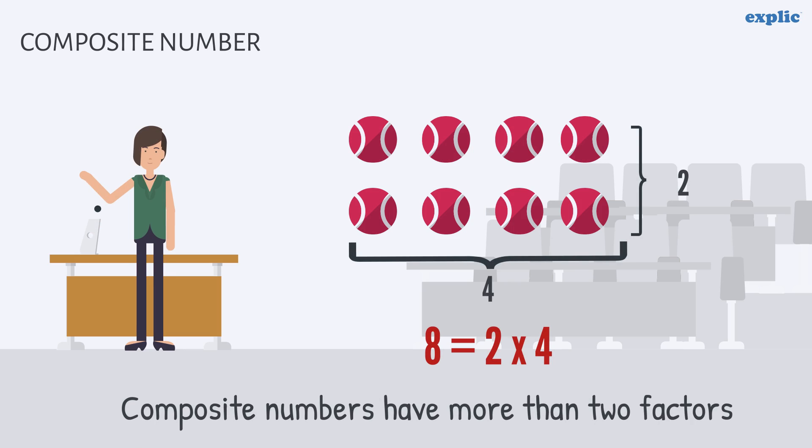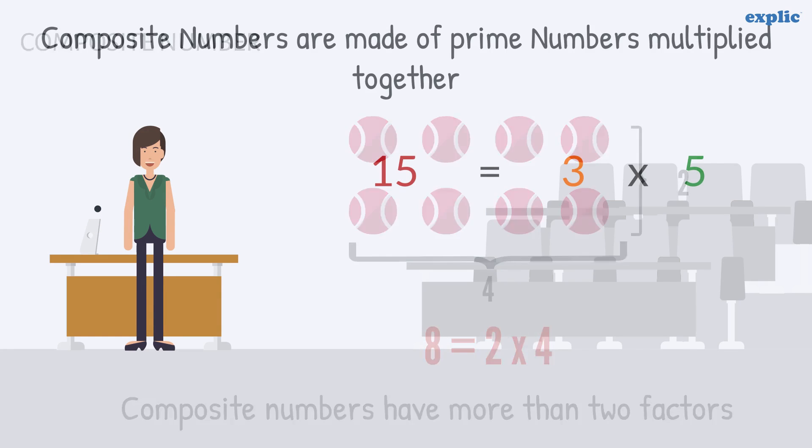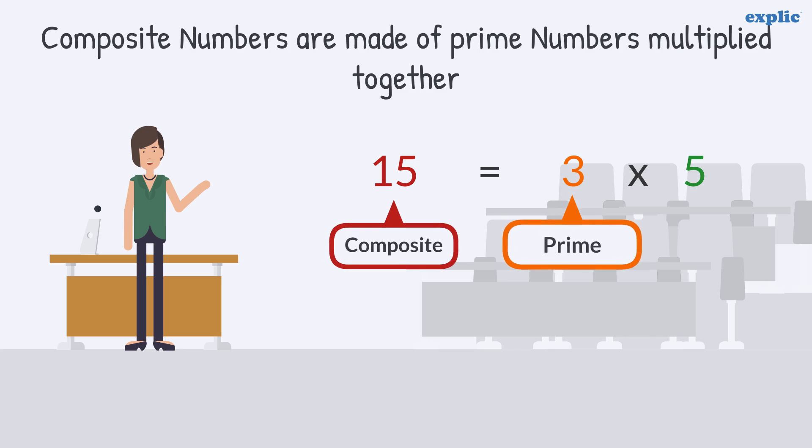Composite numbers have at least one more factor other than 1 and the number itself. Composite numbers are made of prime numbers multiplied together. For example, composite number 15 is a multiple of 3 and 5, where 3 and 5 are prime numbers.